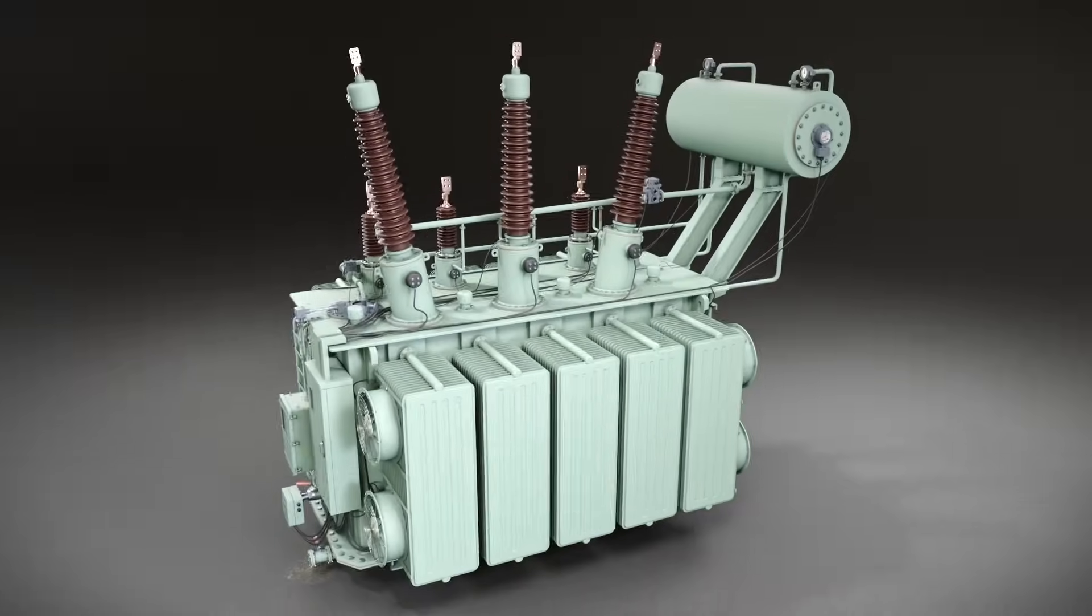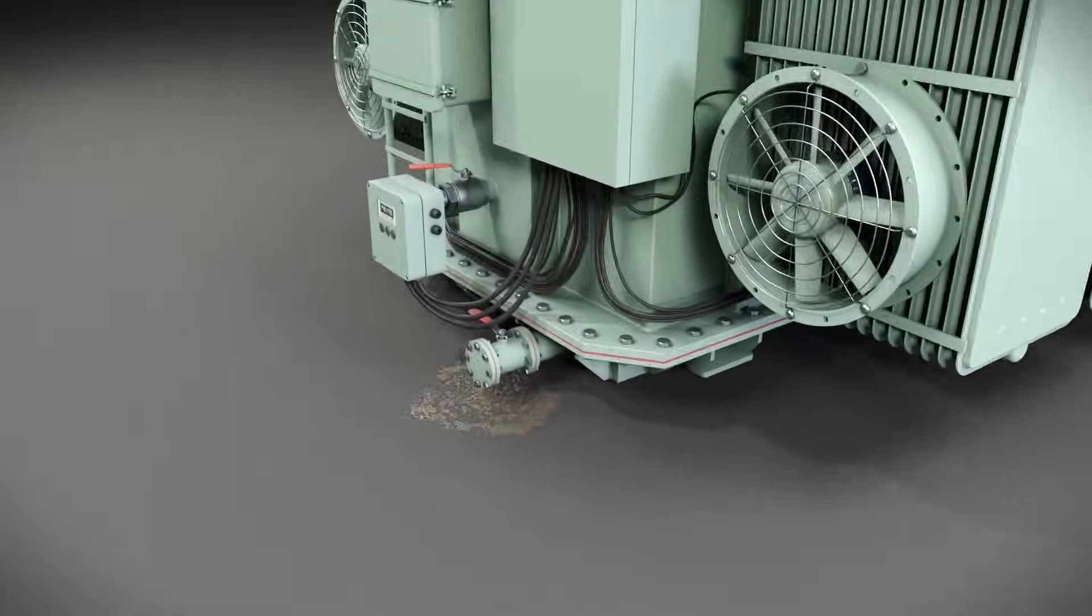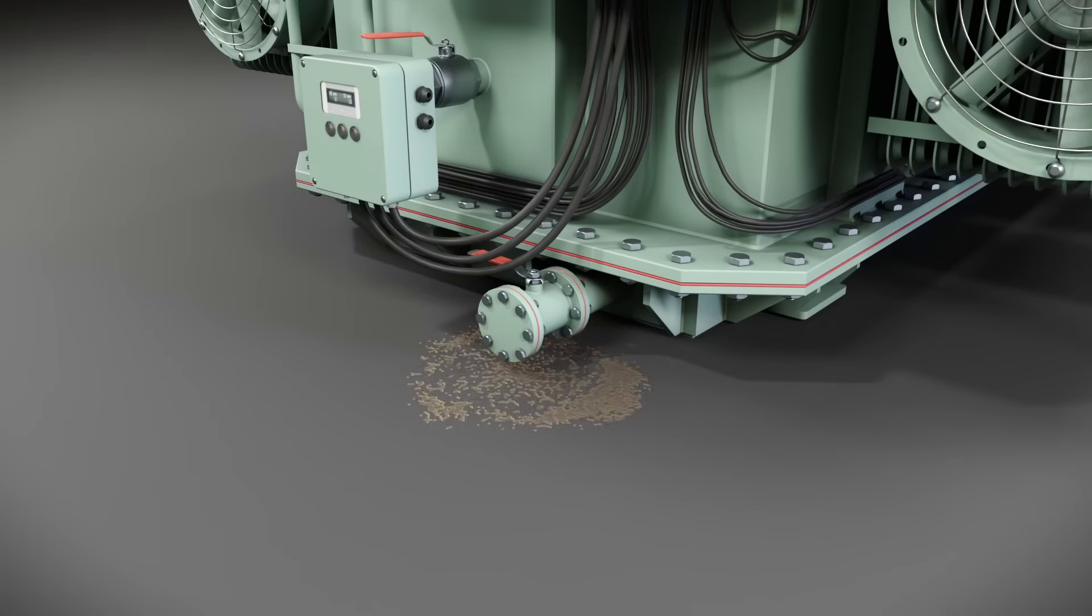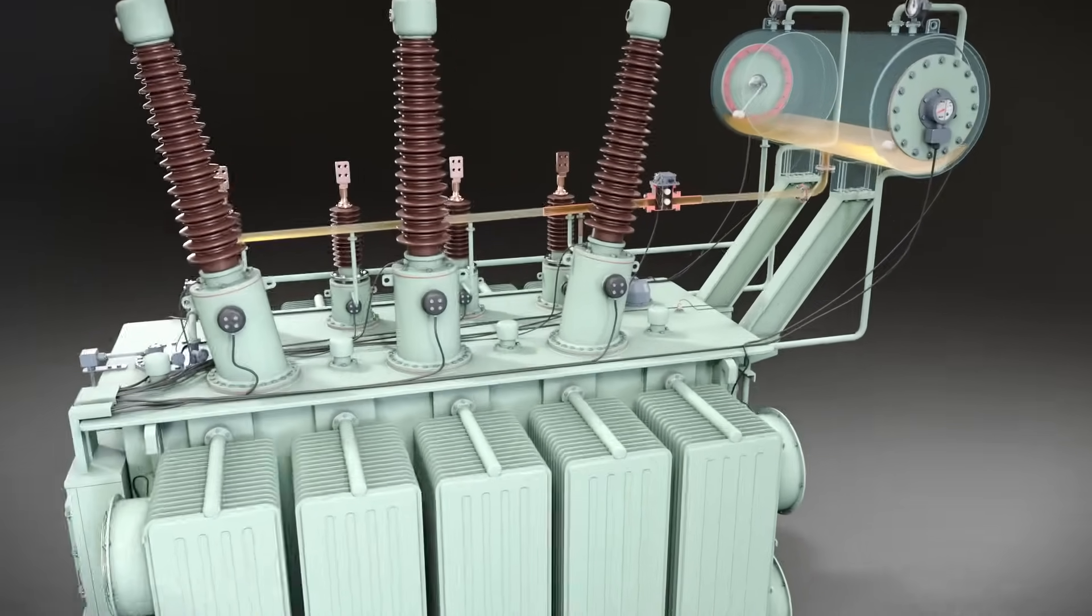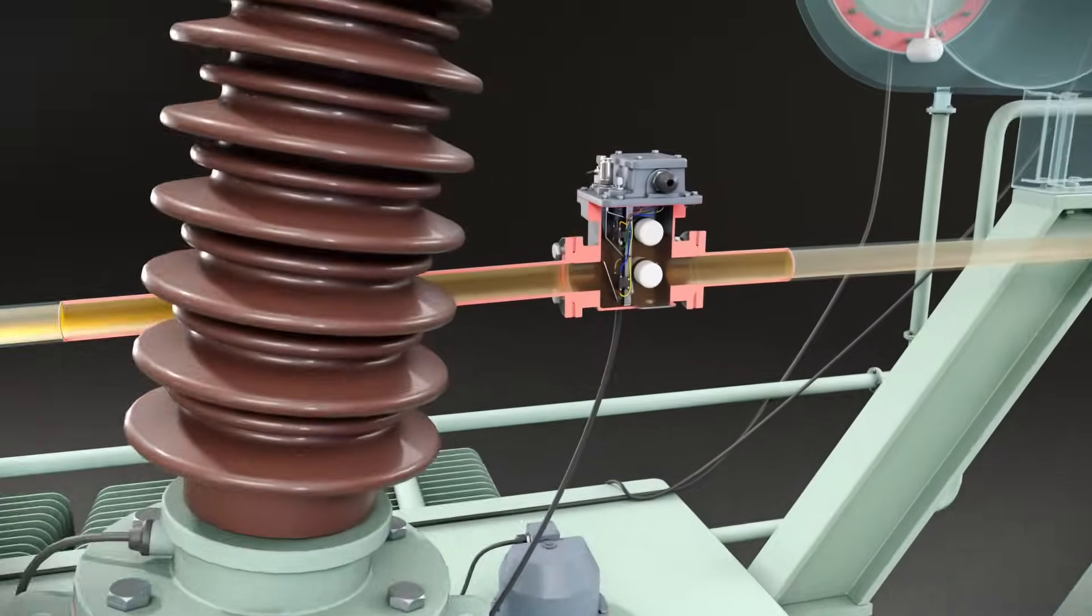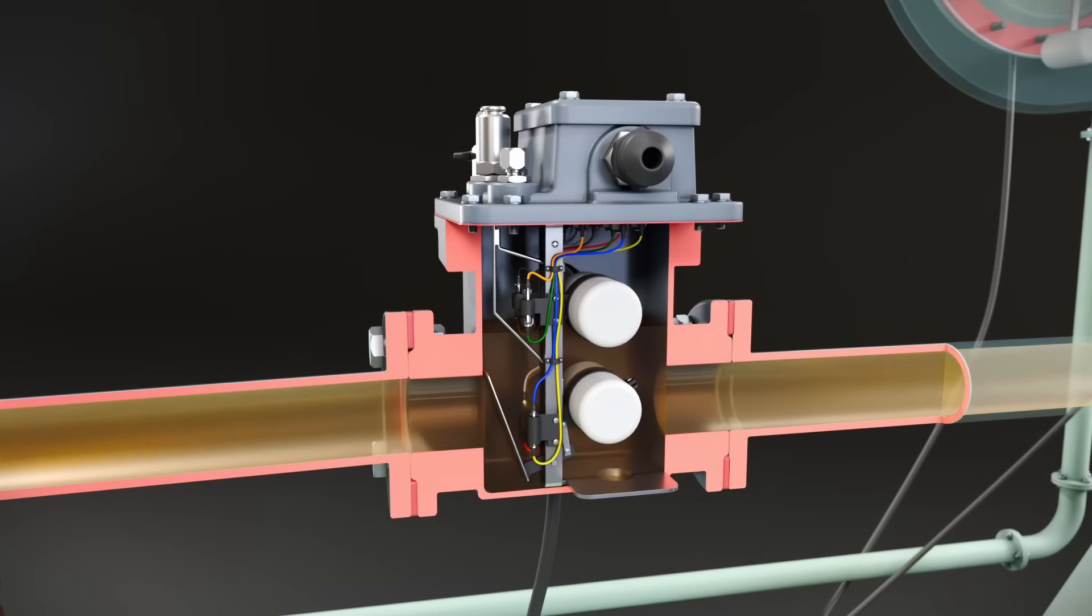Now, imagine a scenario where the oil inside the transformer begins to leak. As a result, the oil level in the conservator starts to decrease, causing the oil level in the Buchholz relay to drop as well. Initially, the upper float responds to the lowering oil level by moving downward, activating its magnetic switch to trigger an alarm signal. This serves as an early warning of a potential issue. If the oil level continues to drop, the lower float will also descend.